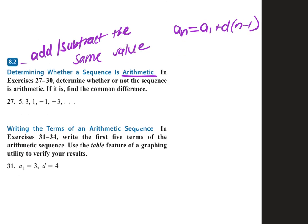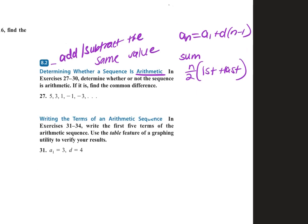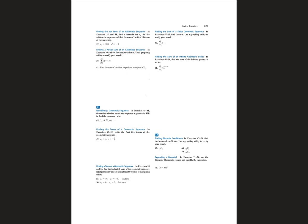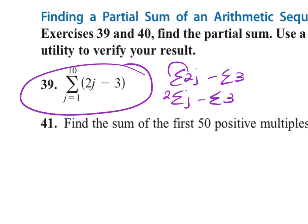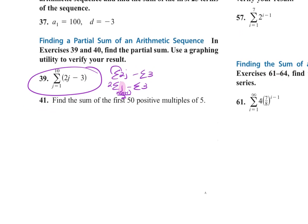For sigma notation with arithmetic sequences, you can use N over 2 times first plus last, but you can also use your summation rules. For example, with 2J minus 3, split it up: bring the 2 to the front as 2 times summation of J, then subtract the summation of 3. Then apply the formula N times (N plus 1) over 2. So if there's a sum, difference, or a power, you can split them using the summation rules and go either way.